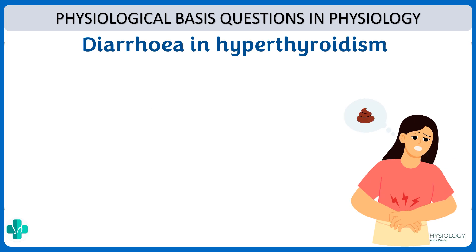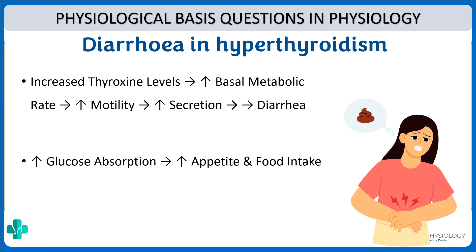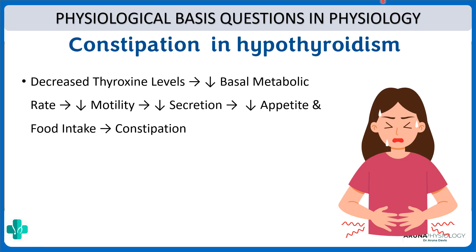Why is there diarrhea in hyperthyroidism? Thyroxine usually increases GI motility. So with hyperthyroidism there would be increased basal metabolic rate, increased motility and increased secretion, thereby causing diarrhea. There is also an increased appetite because increased glucose absorption in hyperthyroidism leads to increased appetite and food intake. So though there is increased appetite and food intake, the patient will also have diarrhea. The opposite occurs in hypothyroidism — motility is decreased, there is decreased secretion and decreased appetite, and on the whole it causes constipation.